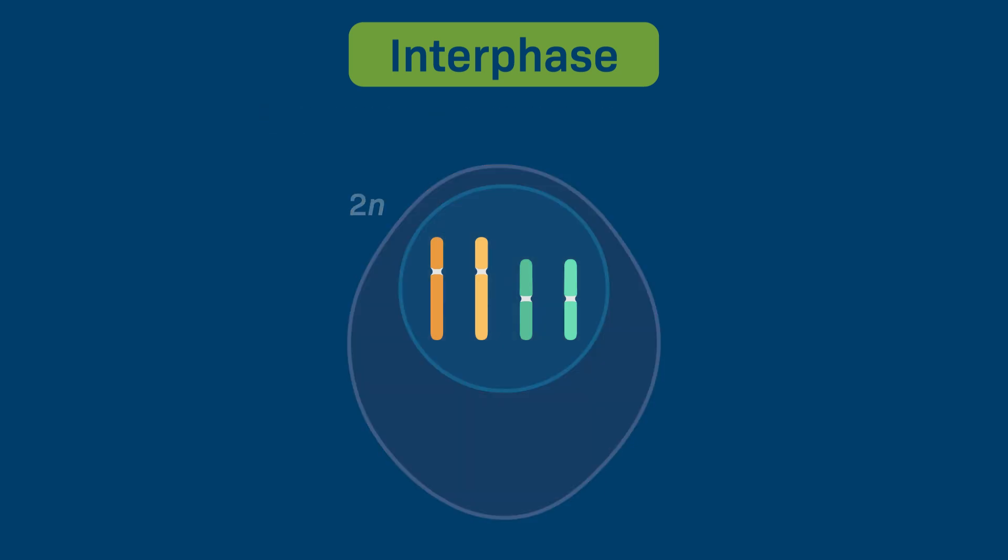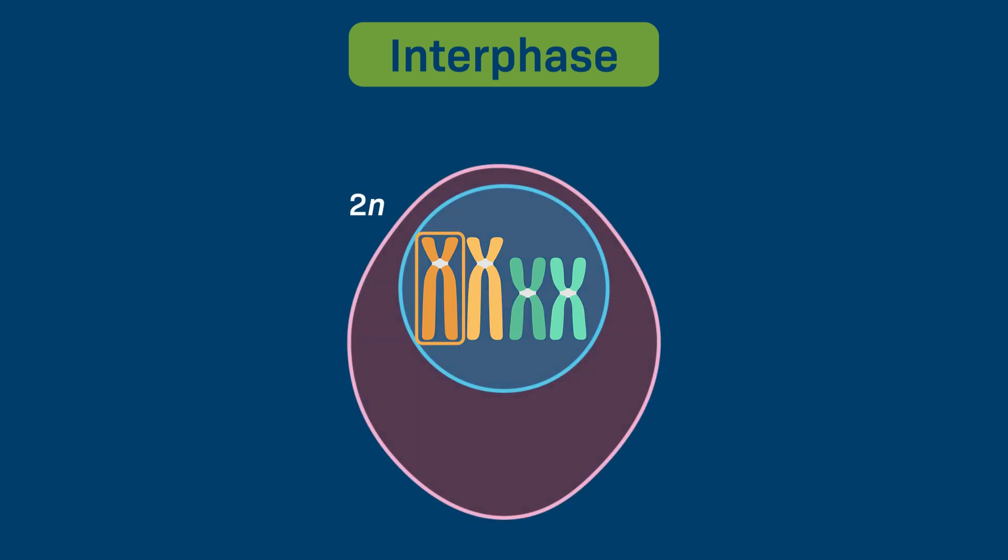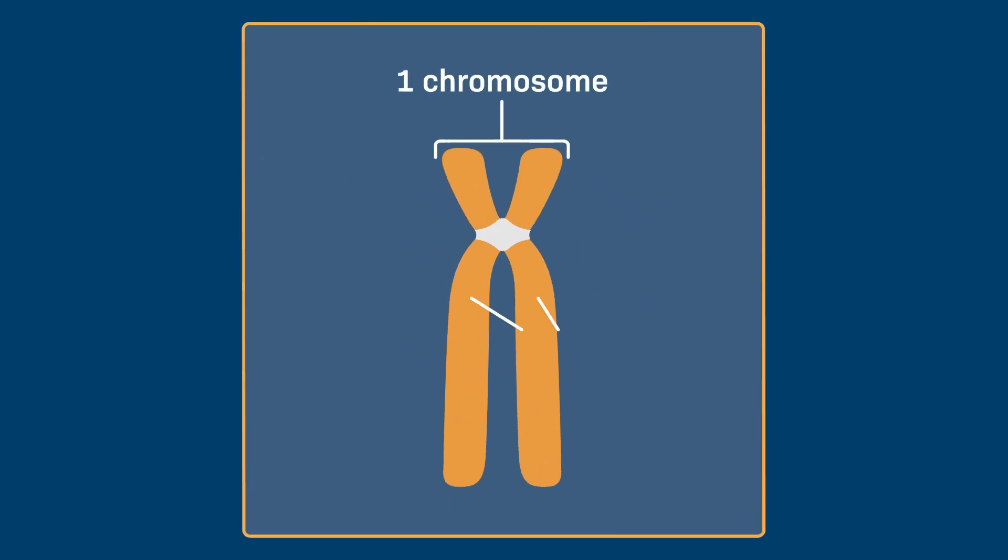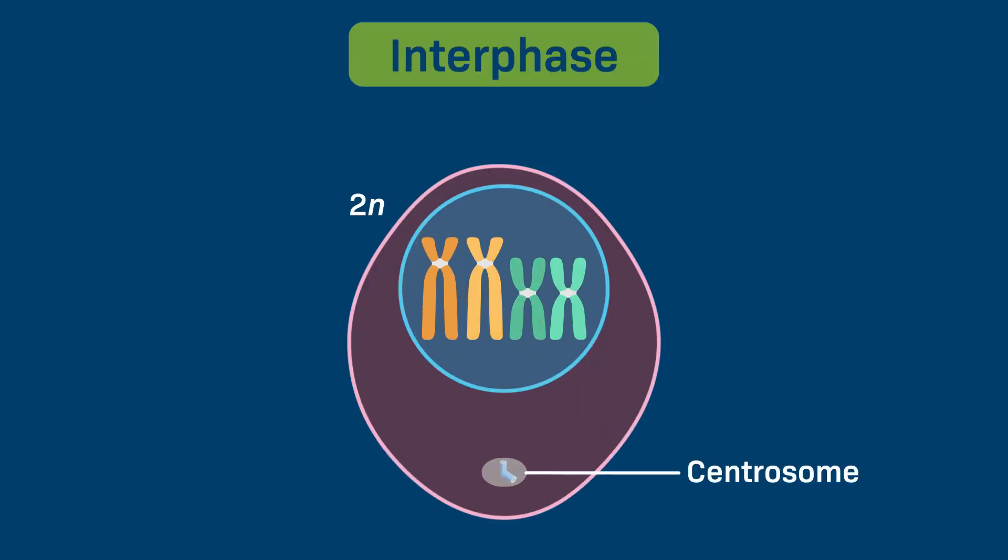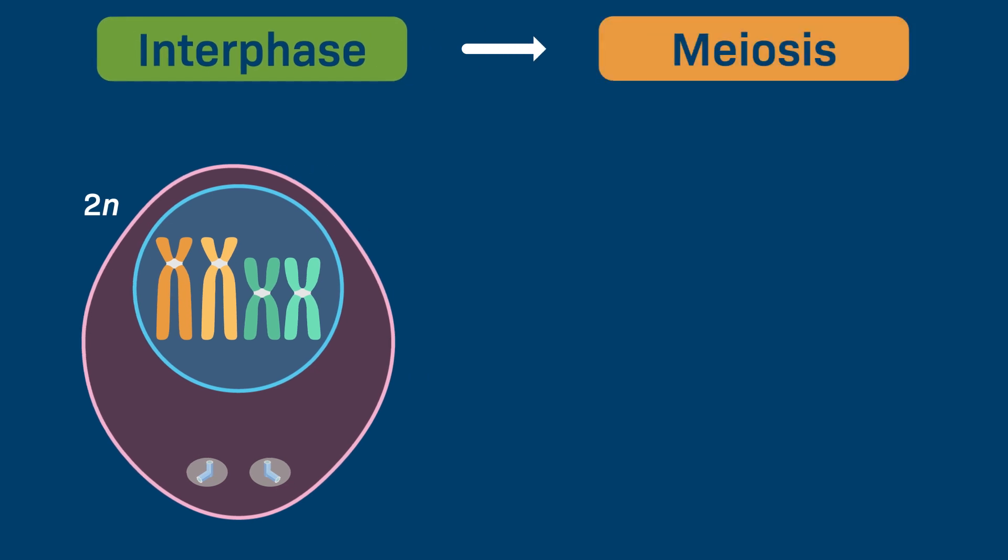This helps to illustrate that the process of DNA replication results in each chromosome being copied. The identical copies of a chromosome that result from DNA replication are called sister chromatids. The centrosome is also copied, so that the cell is ready to enter meiosis at the end of interphase.